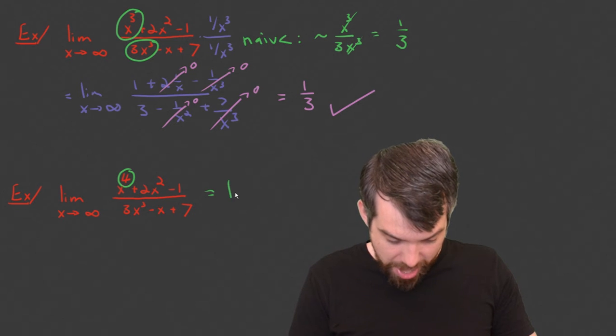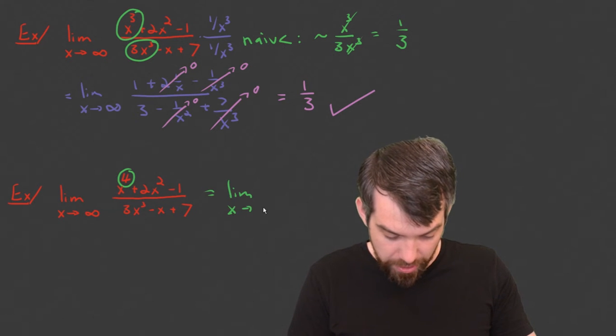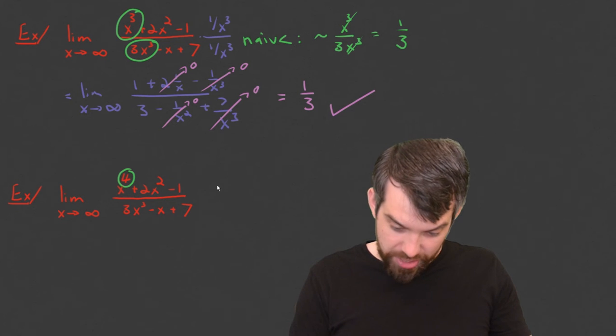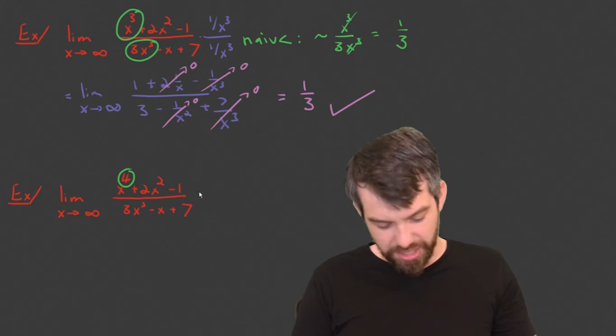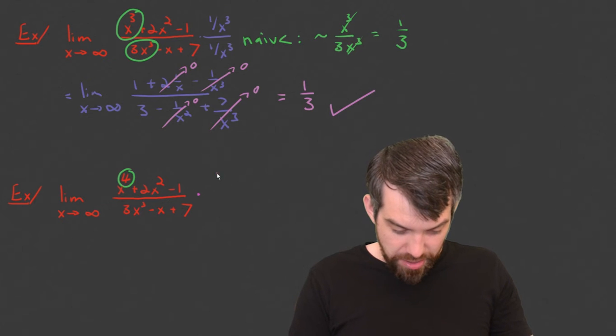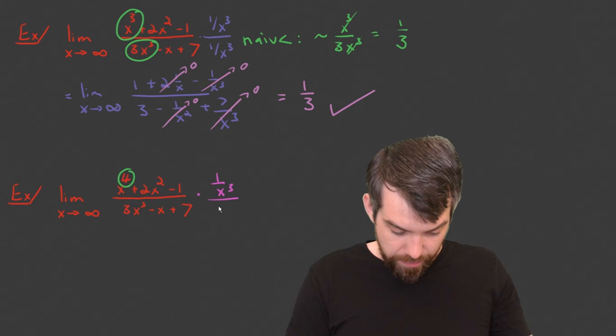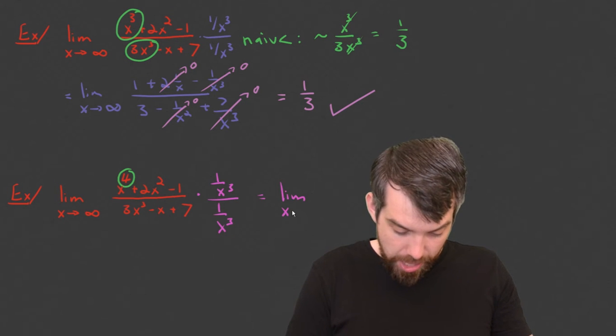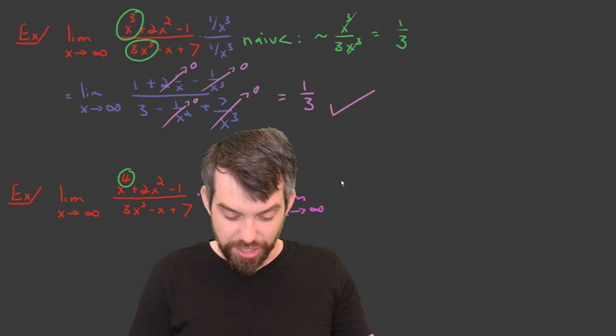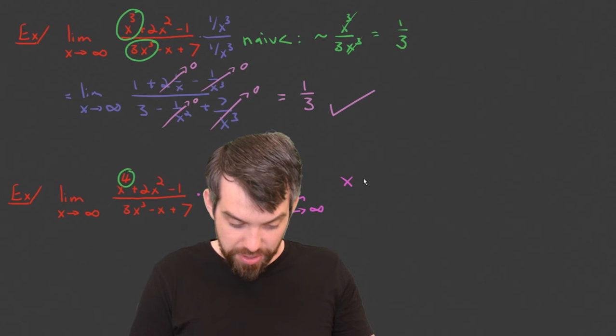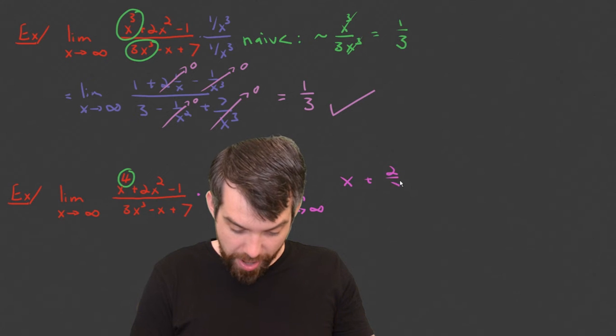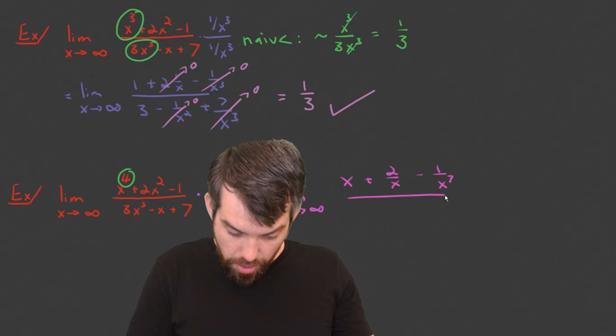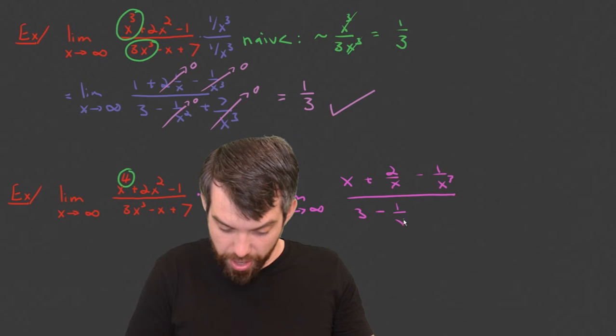I can say that this is, in our same way as before, the limit as x goes to infinity. Now I'm going to continue in my same way. I'm going to do my same trick. And I notice I've got x to the fourth on the top and x to the third on the bottom. So I'm going to do the same thing: 1 over x cubed divided by 1 over x cubed. This is going to get me the limit as x goes to infinity of, well, it's just an x, and then it's all the same after that. Plus 2 divided by x minus 1 over x cubed, all divided by 3 minus 1 over x squared plus 7 over x cubed.